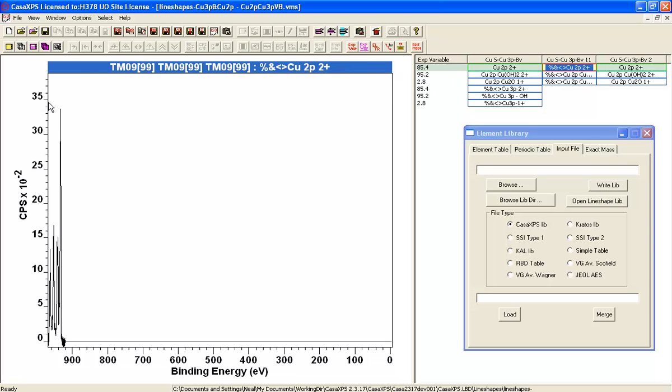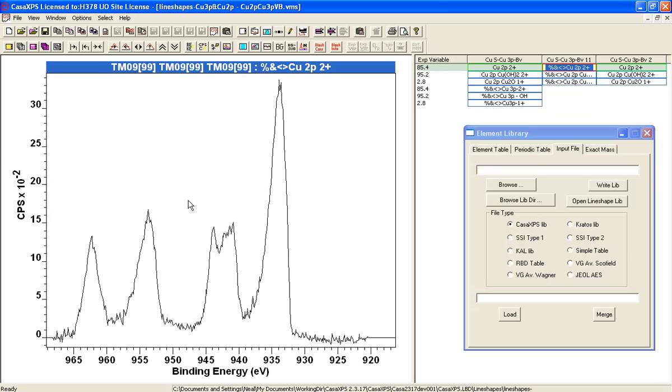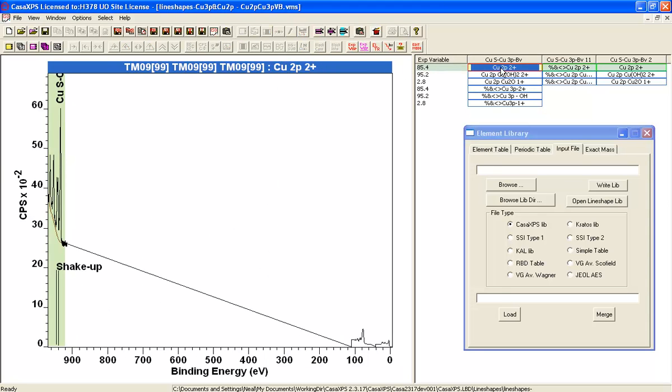So these are the line shapes. So if I wanted to zoom in, I can have a quick look at what that line shape looks like. And this has been derived, as I say, from data.